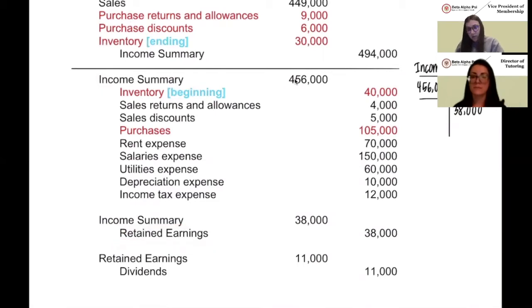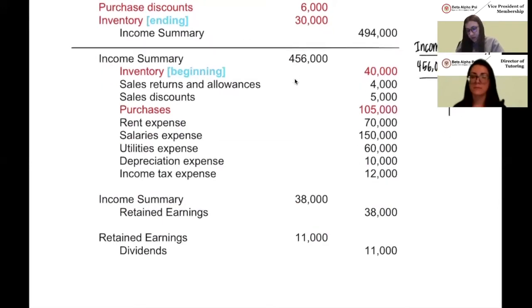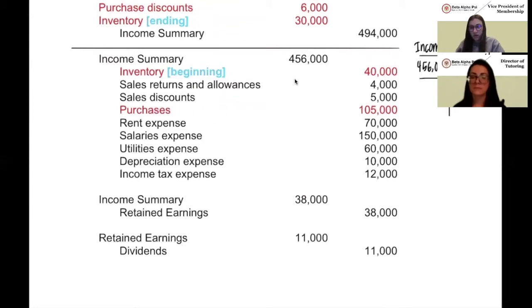We also need to pay our dividends of $11,000. So we debit retained earnings and credit dividends.